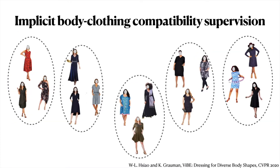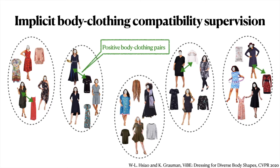While the supervision is not exhaustive, we can easily bootstrap it. We first cluster body shapes in our dataset into discrete types, and fashion models in the same cluster would form positive body-clothing pairs with clothing worn by all bodies in this cluster.